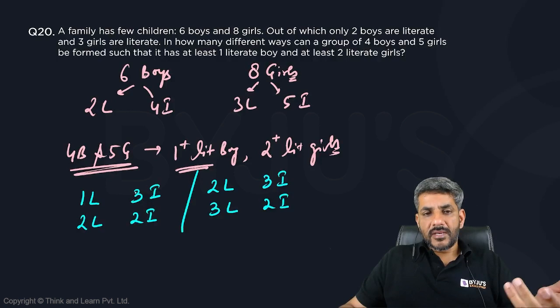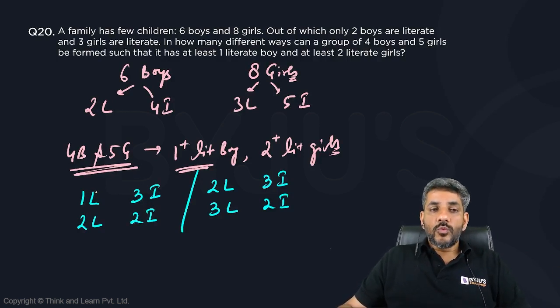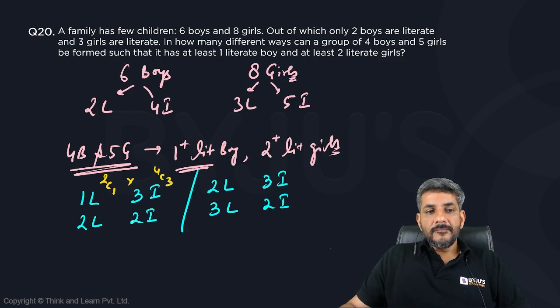We just have to select them now and multiply the total number of ways. In how many ways can one literate boy be selected out of two? It is 2C1. Three illiterate boys out of four? It is 4C3. Similarly, two literate boys out of two? It is 2C2. And two illiterate boys out of four? That is 4C2.